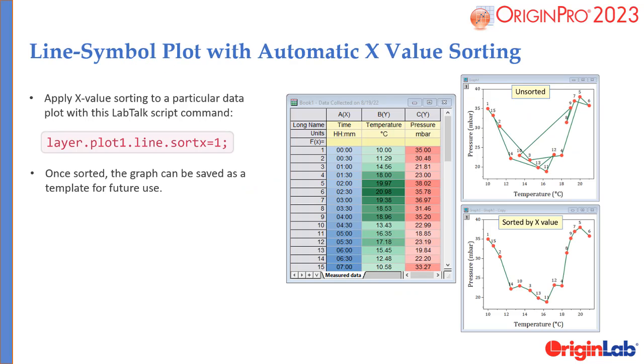Perform automatic X-value sorting of data in line or line symbol plots without having to sort the worksheet columns. This is particularly useful when you have multiple columns in a worksheet and want to plot any two columns against each other without having to reorder the worksheet rows.